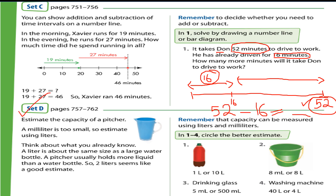Set D: circle the better estimate. Question 1 — look at the bottle. Can it hold 1 liter or 10 liters? This is just like a regular bottle you take to school, so the answer is 1 liter. Question 2 — what is the capacity of this bucket: 8 milliliters like an eyedropper, or 8 liters? The answer is 8 liters. Likewise, do questions 3 and 4.